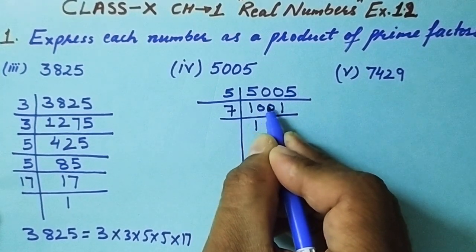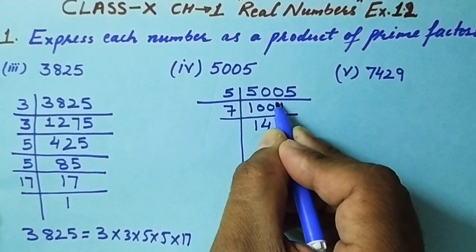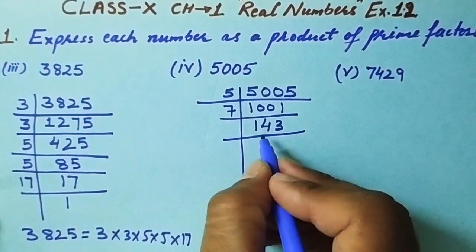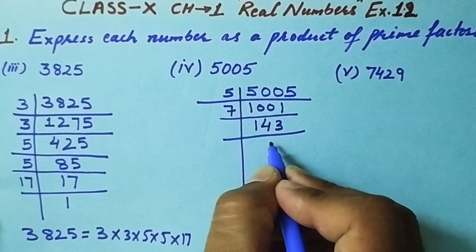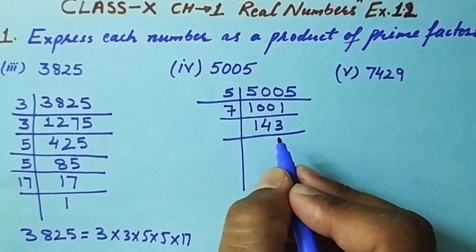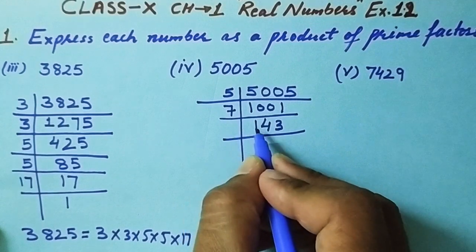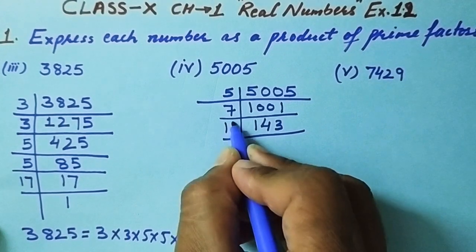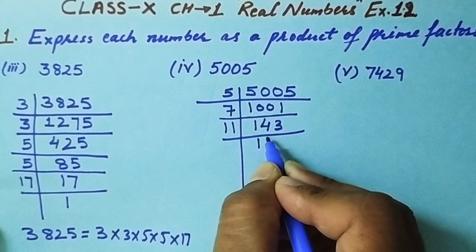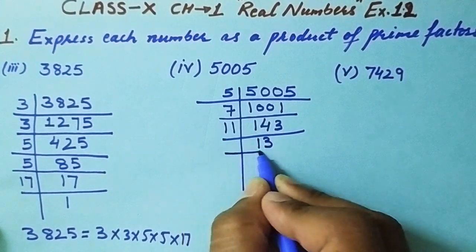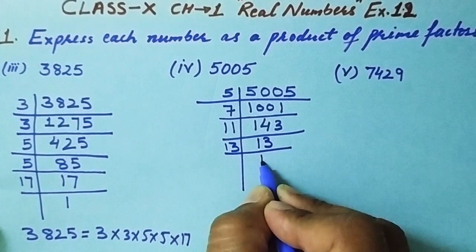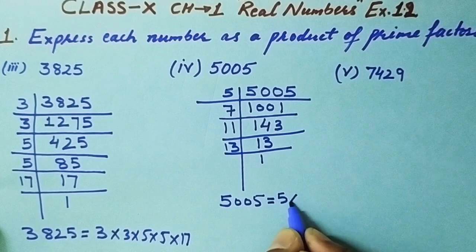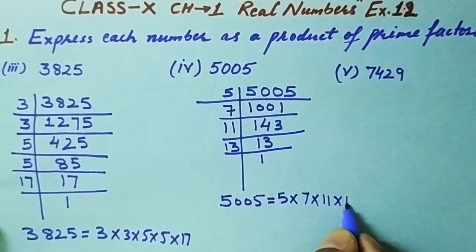Now checking 143. It's not divisible by 7. Next prime is 11: 143 ÷ 11 = 13. We verify: 11 × 13 = 143. Now 13 is itself a prime number. So the prime factorization of 5005 is 5 × 7 × 11 × 13.